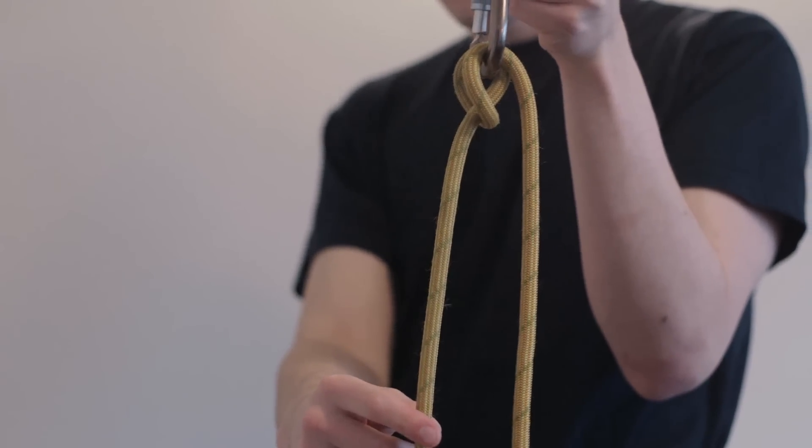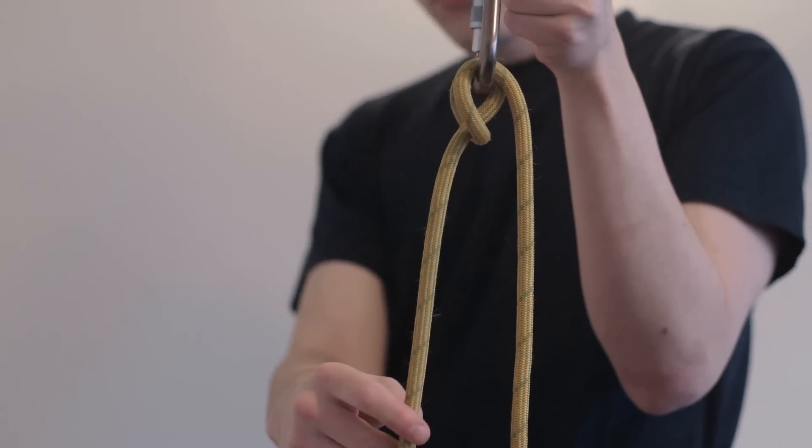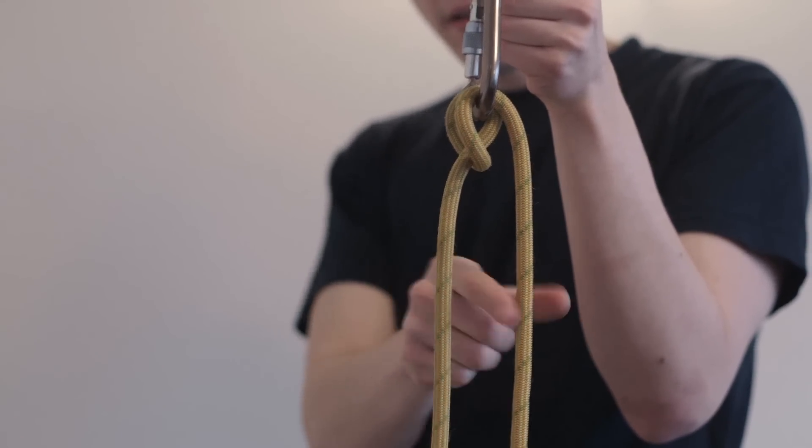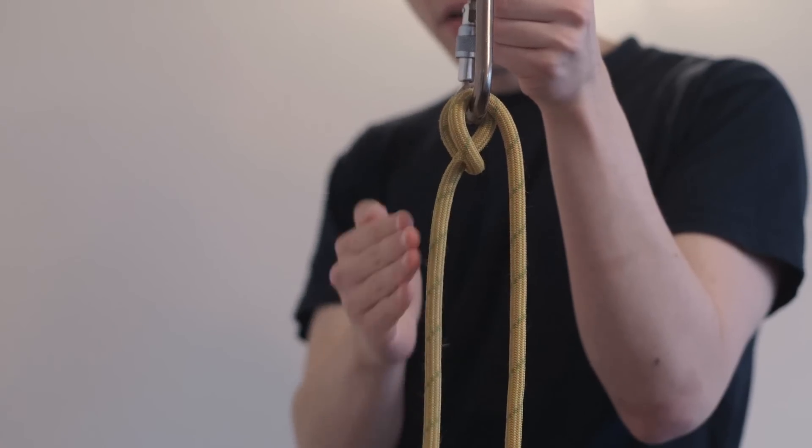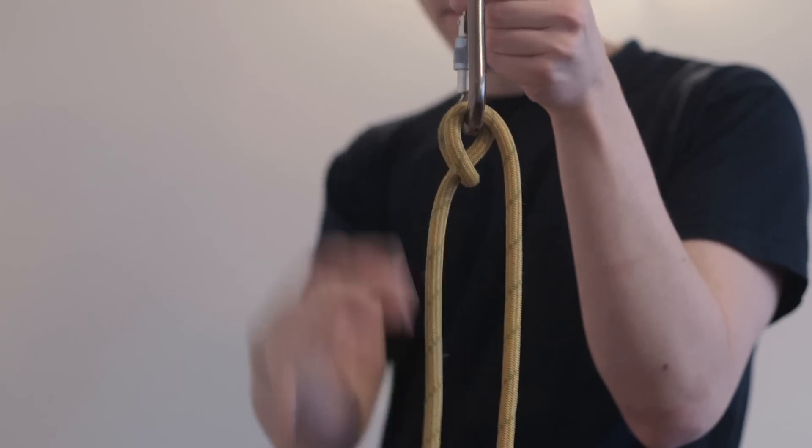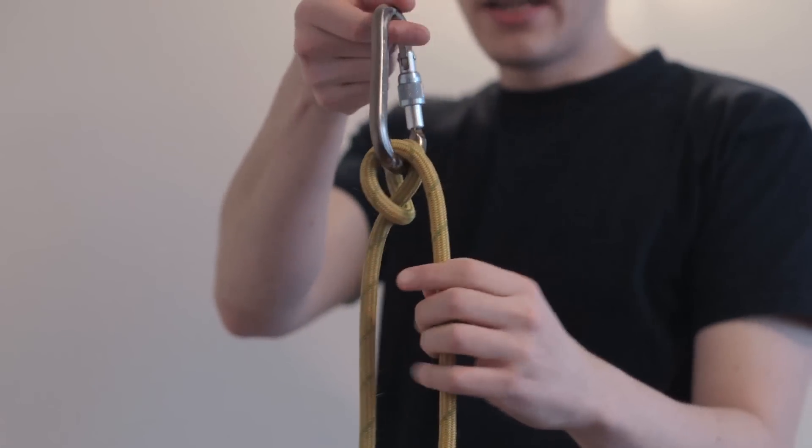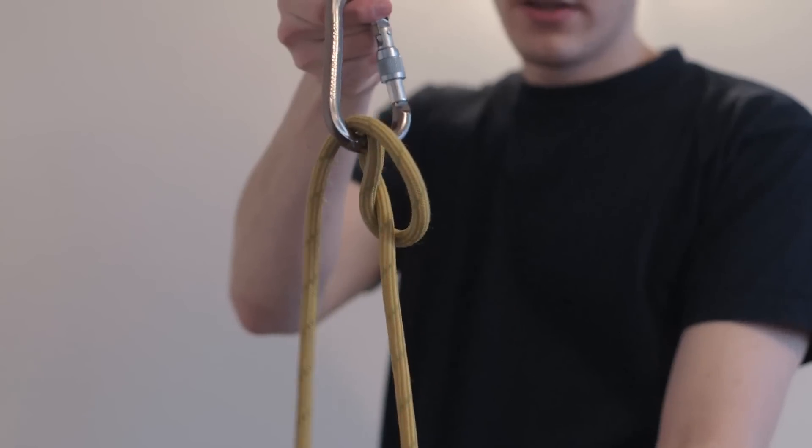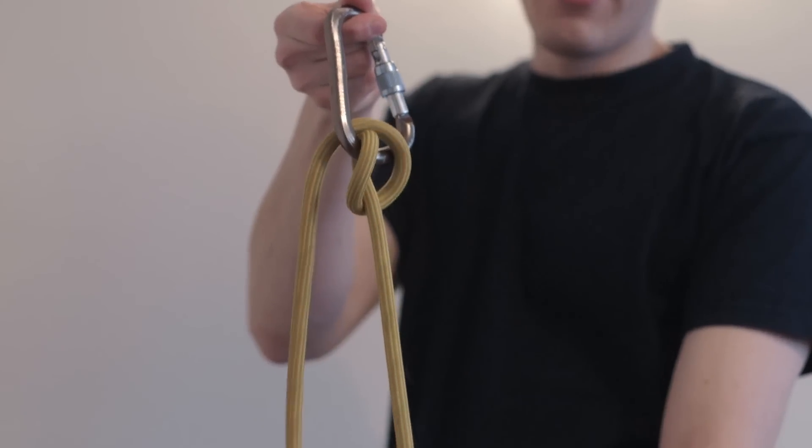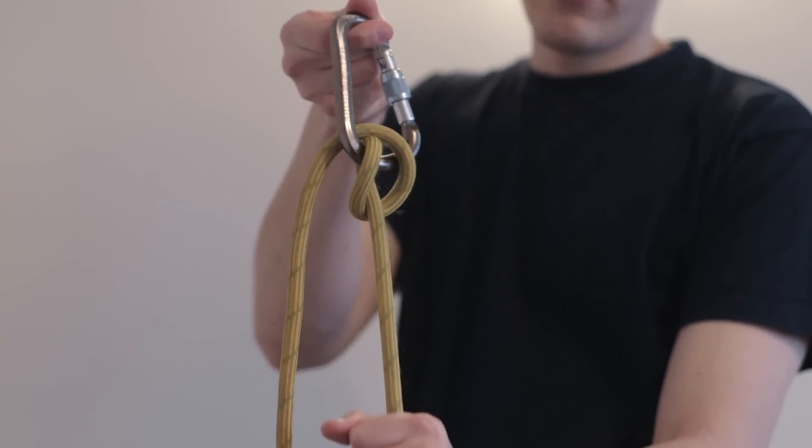Now it's worth noting at this point that the Munter Hitch is strongest when both strands of rope are parallel, so the climber's side and the belayer's side are next to each other, and that way you can arrest a fall quite easily. And once again, if you want to take in slack the other way, it'll flip over and correct itself, and there you have the Munter Hitch flowing quite nicely.